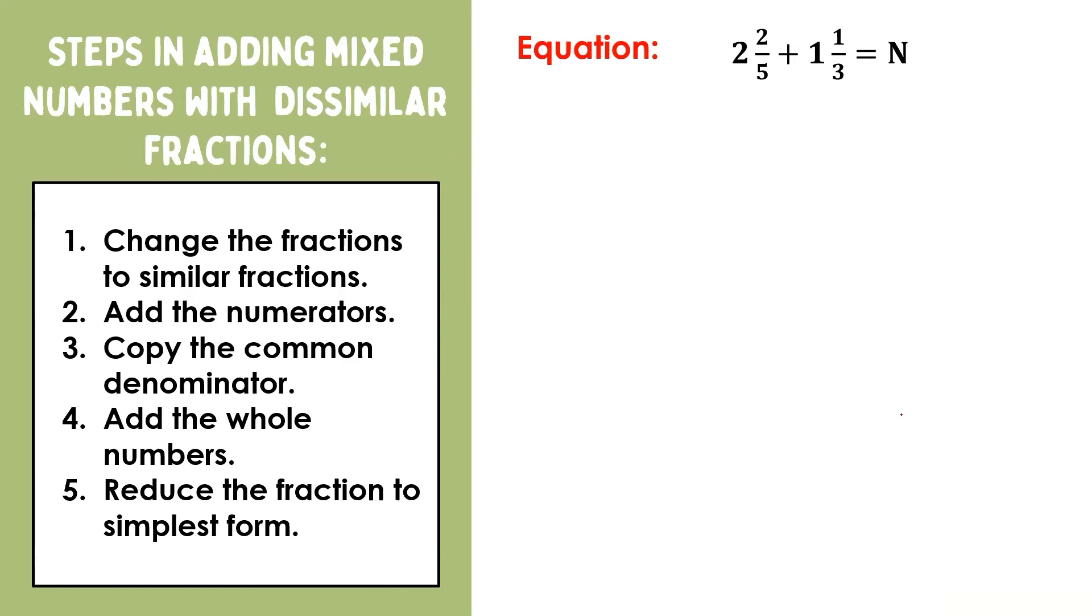For our last example, let's have 2 2/5 + 1 1/3 = N. Let's start by changing the dissimilar fractions into similar fractions. Let us set aside first the whole numbers and focus on these two fractions.